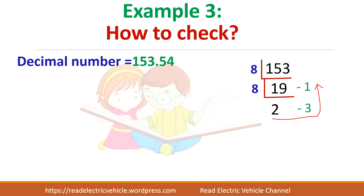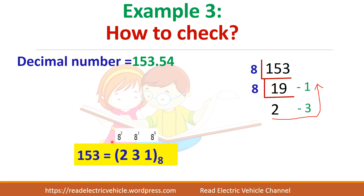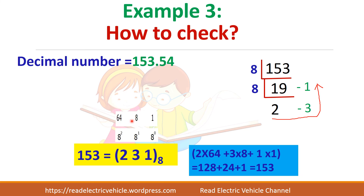Let us verify the integer part. For octal number 231, assign weights: 8 power 2 = 64, 8 power 1 = 8, 8 power 0 = 1. Calculate: 2×64 + 3×8 + 1×1 = 128 + 24 + 1 = 153. The answer is correct.